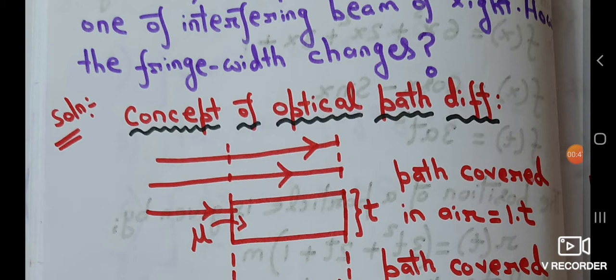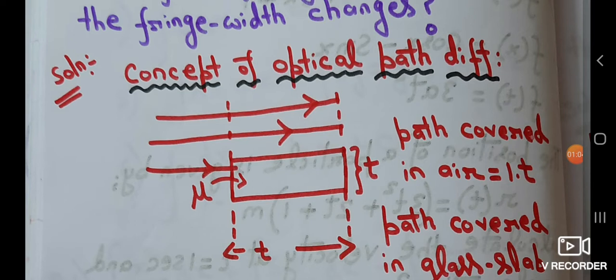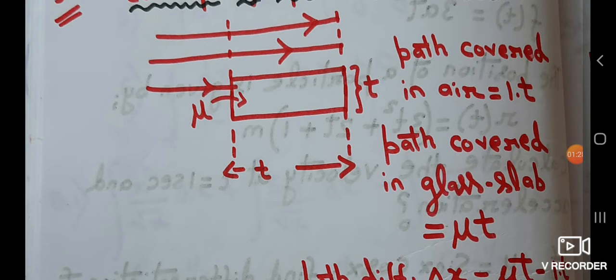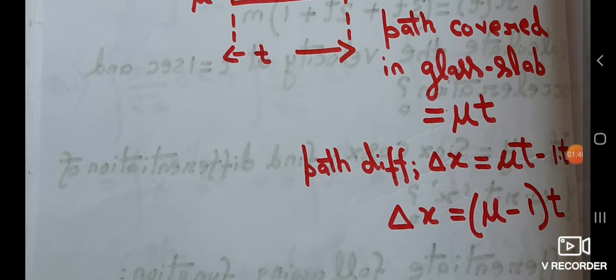In the diagram, light waves are passing through a glass slab, and above the glass slab there is no medium present. The path covered by the light wave in air is given by the refractive index of air multiplied by the distance — which is 1 × t, since t is the thickness of the glass slab. In the presence of the glass slab, the path covered is mu × t. So the path difference is mu·t − 1·t, which equals (mu − 1)·t. This delta x is known as the optical path difference.